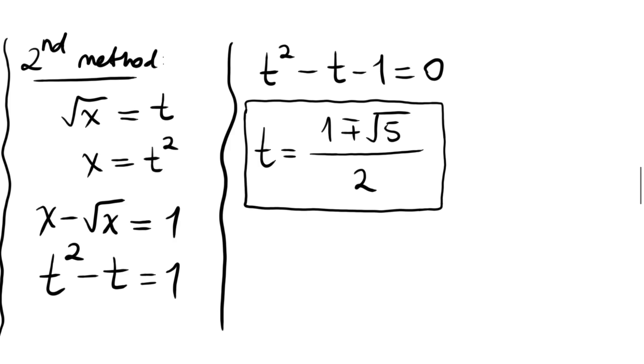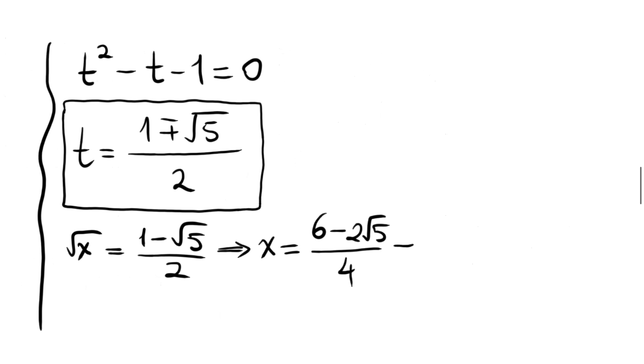These are values for our new variable t. Now, remember t was root x, so we will find two x values from root x equals 1 minus root 5 divided by 2 and the positive version. Let's calculate: squaring both sides, we have x equals 1 plus 5, which is 6, minus 2 times root 5, divided by 4. Canceling by 2, we get x equals 3 minus root 5 divided by 2.